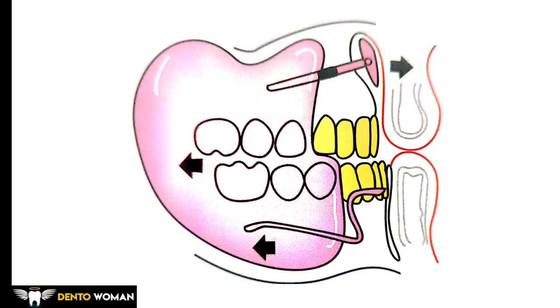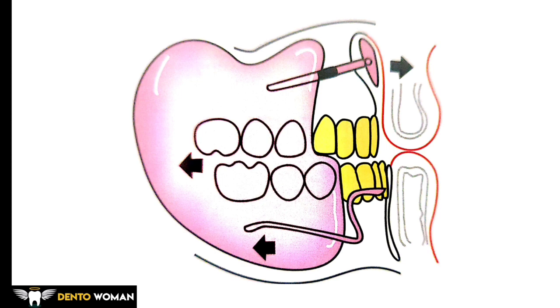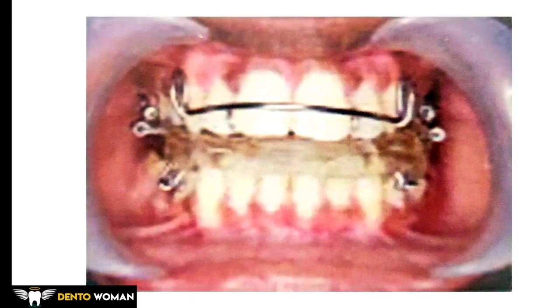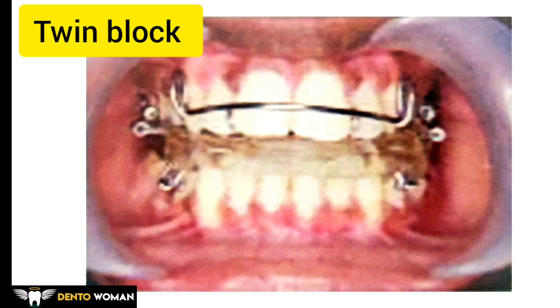This is the image of the Frankel 3 appliance — you can identify it because the labial bow is in the lower arch. The distracting forces on the upper lip are removed from the maxilla by the upper labial pads, and the force of the upper lip is transmitted through the appliance to the mandible because of the close fit. You can see the upper labial pads and the labial bow in the lower arch.